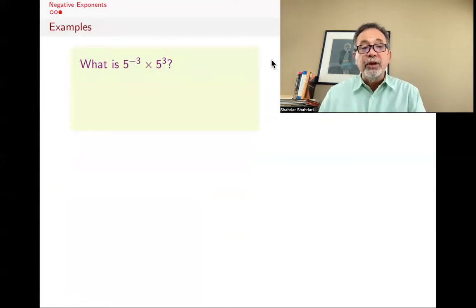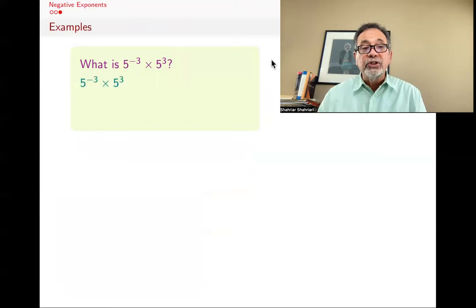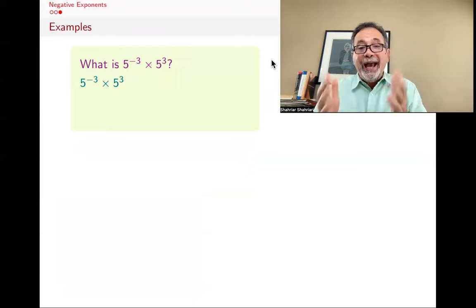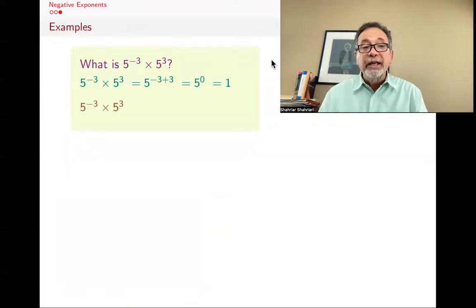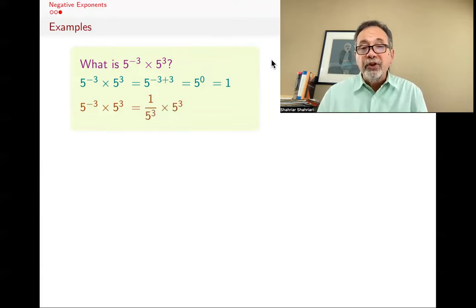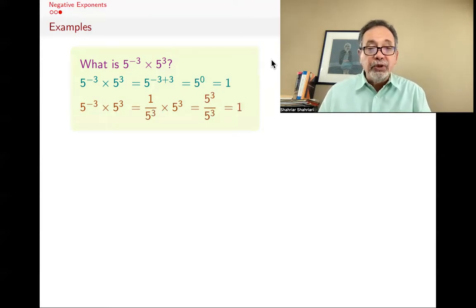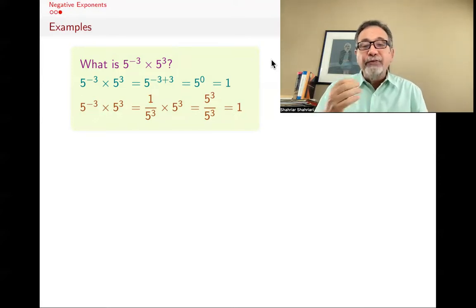I'll give you two examples of how to use some of these. What's 5 to the negative 3 times 5 to the 3rd? One way is to say there are two powers with the same base, so we add the exponents: 5 to the minus 3 plus 3. Minus 3 plus 3 is 0, and 5 to the 0 is 1. Another way is going back to the definition: 5 to the minus 3 is 1 over 5 to the 3rd, so 1 over 5 cubed times 5 cubed is 5 cubed divided by 5 cubed, which is 1. Both methods give the same answer, and this is in fact one of the reasons we define 5 to the 0 as 1 — so that all our rules continue to work.